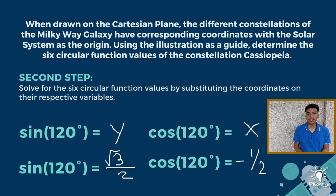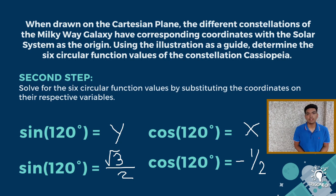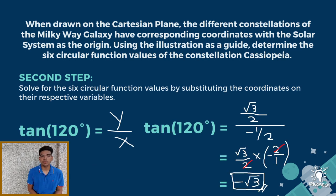Now that we have our coordinates, we can solve for the six circular function values by substituting the coordinates on their respective variables. Let us start with sine theta. Since sine theta equals y, and y in our set of coordinates is square root of 3 over 2, sine theta equals square root of 3 over 2. Next, let us find cosine theta. Since cosine theta equals x, and x in our coordinate is negative 1/2, cosine theta equals negative 1/2. We then proceed to tangent theta. All we have to do is divide y by x: square root of 3 over 2 divided by negative 1/2. Apply the operational rules and cancel 2. Our tangent theta is negative square root of 3.